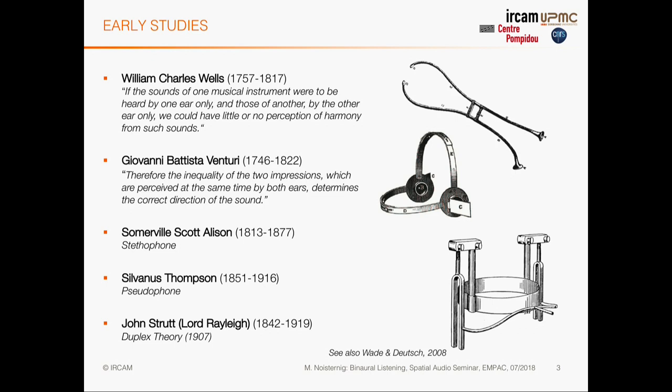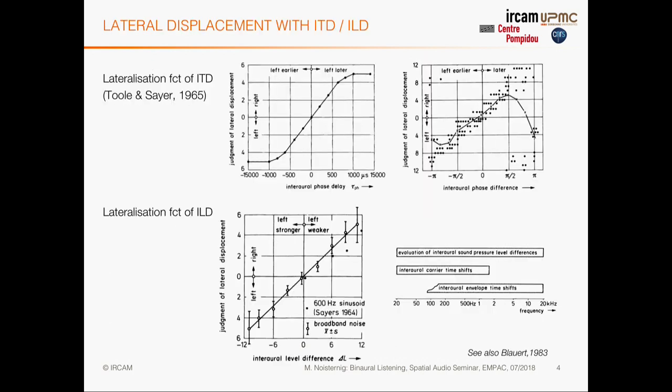The primary cues of localization were formalized by John Strutt, better known as Lord Rayleigh, who first stated the duplex theory of localization — the importance of interaural level difference (ILD) and interaural time difference (ITD) for auditory localization in space. When the sound source comes from the right, the sound wave arrives at the right ear first, then diffracts around the head at low frequencies and reaches the left ear with a time delay linked to the distance between the ears.